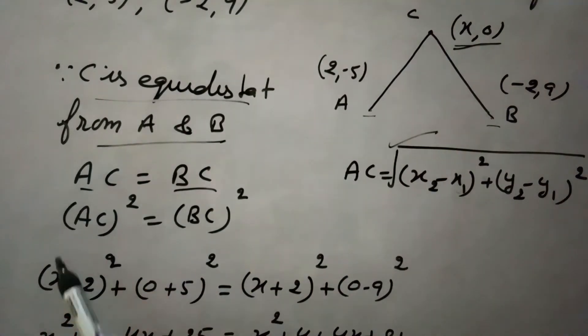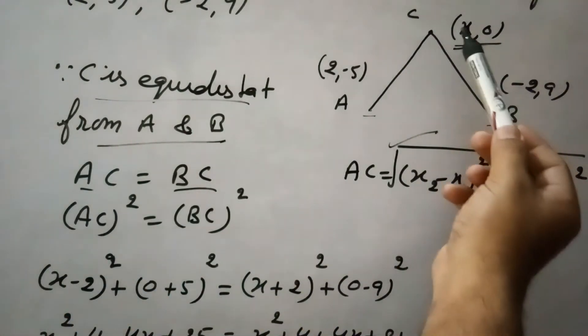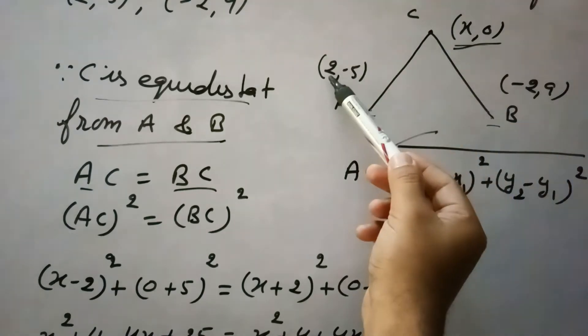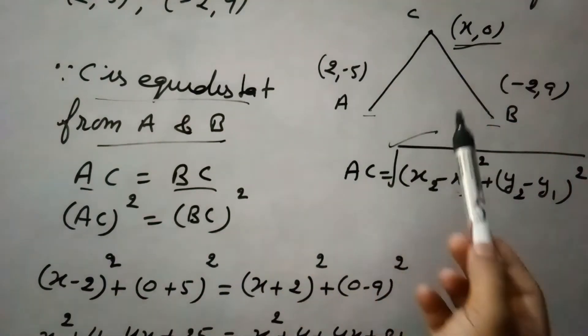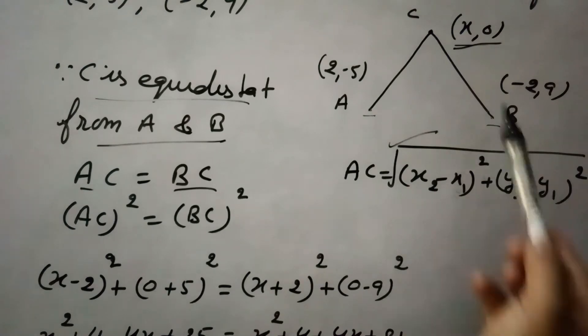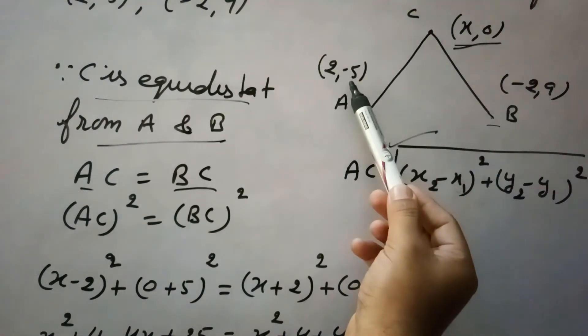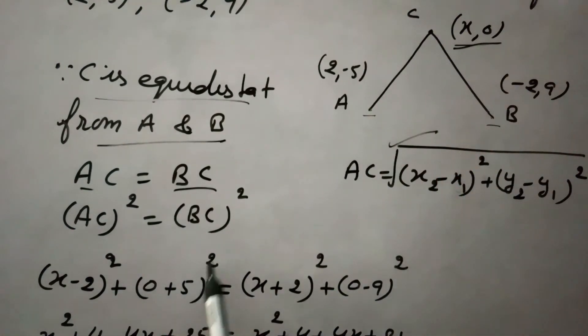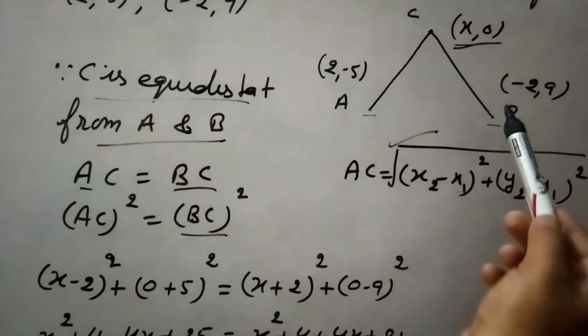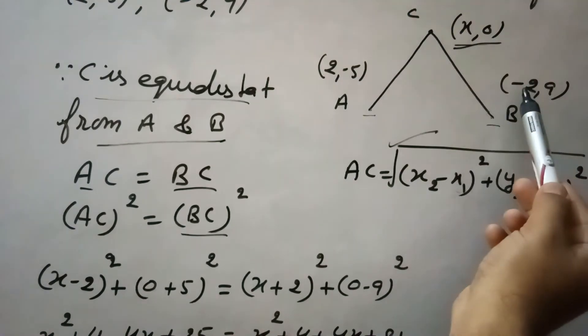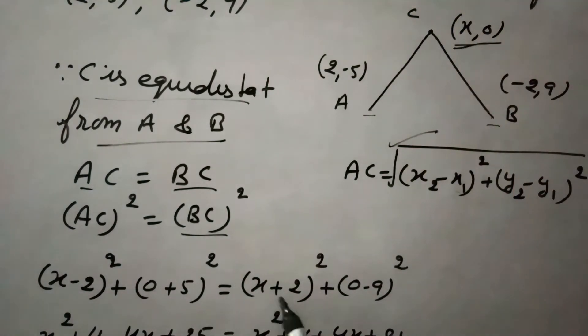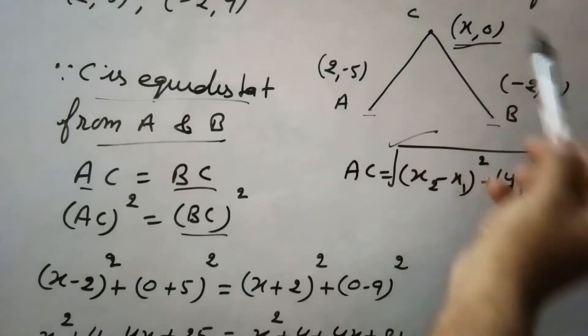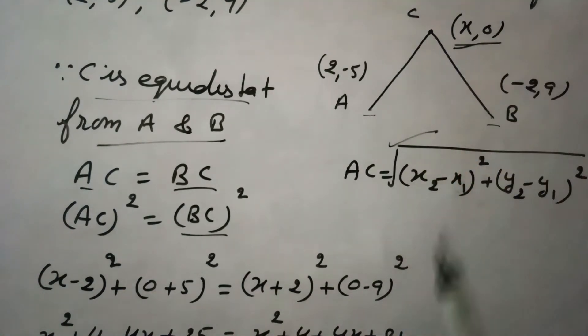So for AC, distance formula is x2 minus x1. x2 is here x and x1 is 2, so it is (x - 2)² and y2 minus y1, so it is (0 + 5)². Similarly for second side BC, x2 is x and x1 is -2, so it is (x + 2)² and y2 minus y1, y2 is 0 and y1 is 9, so it is (0 - 9)².